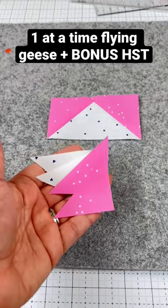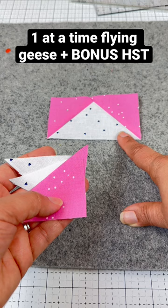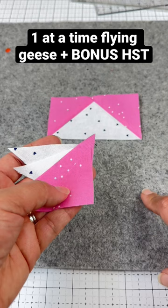Do you hate that extra fabric waste when making a one at a time flying geese block? Let me show you how to make a one at a time flying geese with bonus half square triangles.